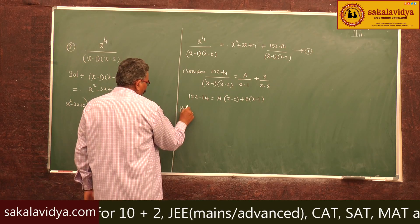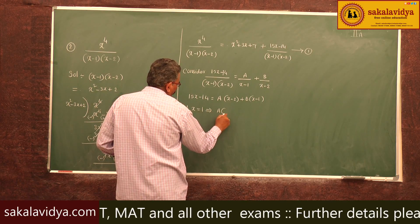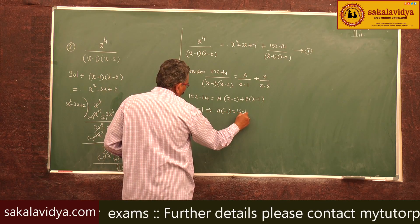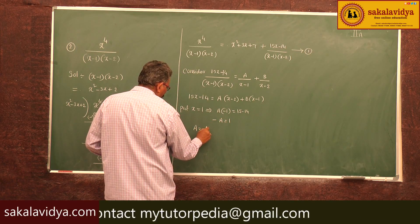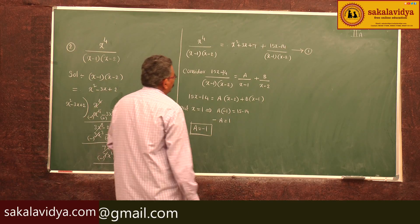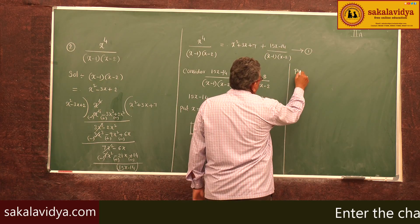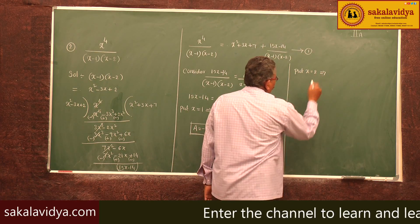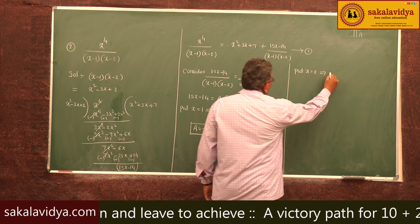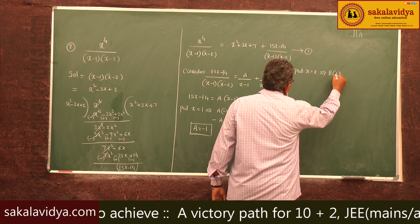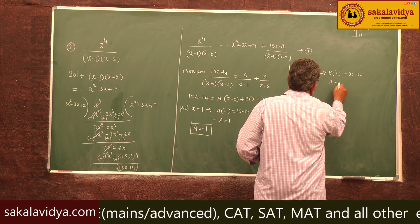Put x = 1: the B term becomes 0, giving A·(1-2) = 15 - 14, so -A = 1, therefore A = -1. Now put x = 2: the A term becomes 0, giving B·(2-1) = 30 - 14, so B = 16.